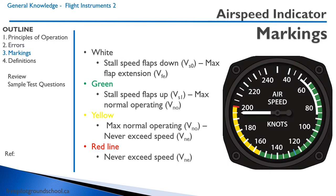The airspeed indicator has a number of important markings. Starting at the bottom, we have a white arc. The bottom of the white arc is the stall speed with the flaps down. The top of the white arc is the maximum flap extension speed — so if you're flying in the circuit and want to put your flaps down, you must be within this white arc. The bottom of the green arc is the stall speed with flaps up, or the clean stall speed. The top of the green is VNO, the maximum normal operating speed, which is also the bottom of the yellow arc. The top of the yellow arc, or the red line, is the never-exceed speed — you absolutely cannot exceed this speed.